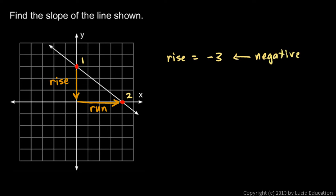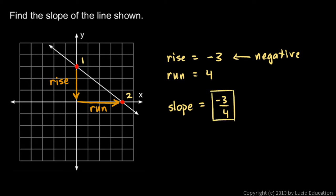That's because when we go from point one to point two, we've gone down vertically. The run is positive four. So the slope, which is defined as rise over run, is negative three over four — you could say negative 0.75. That's the slope of that line: negative three-fourths. Take note of the fact that the slope is negative, and that this graph goes down as we go from left to right.